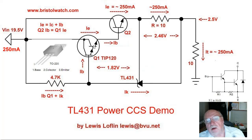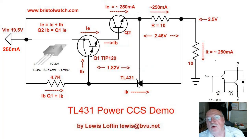IE of Q1 becomes IB — the base current of Q2 — and the emitter current of Q2 is the sum of all the currents. I've rounded it off to about 250 milliamps or so, and when I built the circuit and measured it, it was 250 milliamps, because it all comes back together in the end.